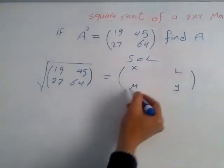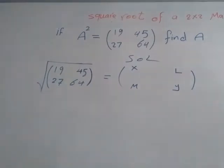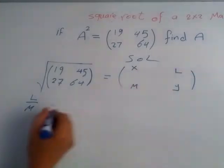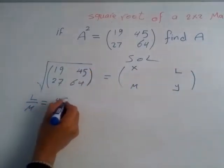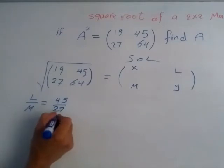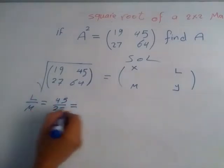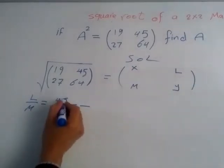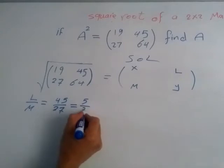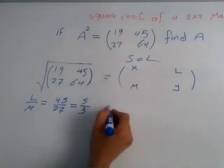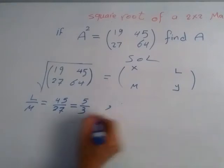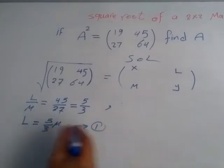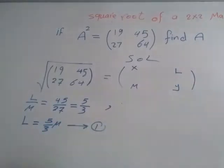So from this I know that L over M, the ratio between L and M, is the same as 45 and 27. If you simplify over 9 here, up and down, 45 divided by 9 is 5, divided by 9 is 3. So we get information about L equal 5 over 3 M. This is my first equation about the two elements.